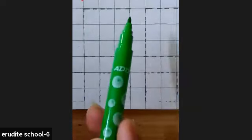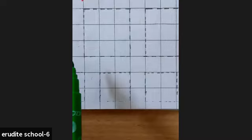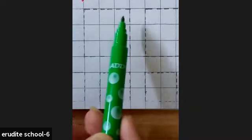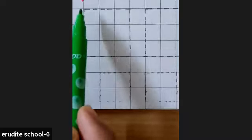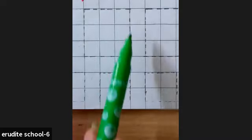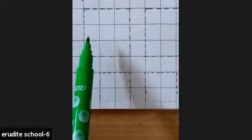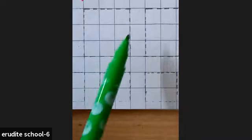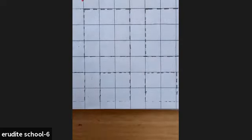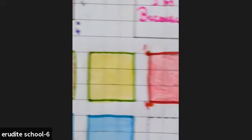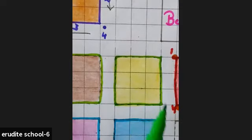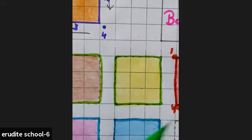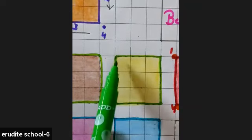And all the sides are equal in size. All the sides are equal in size. Look like the same - all the sides look the same. And it has four sides. It has four sides. And it has four corners - one, two, three, four.